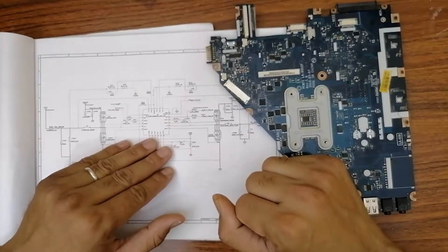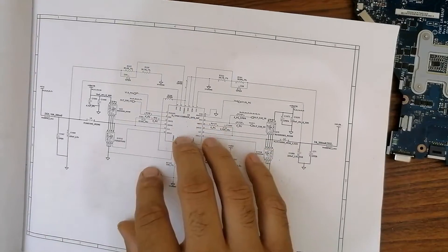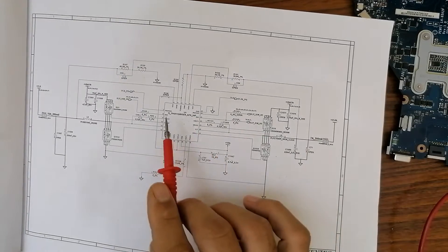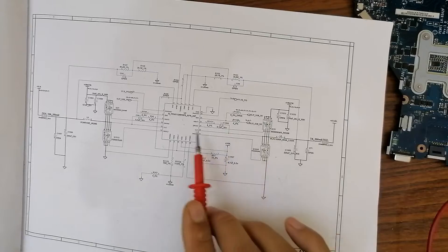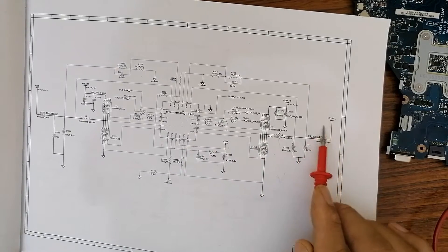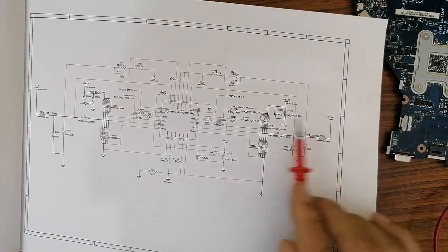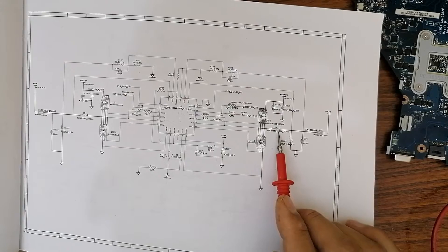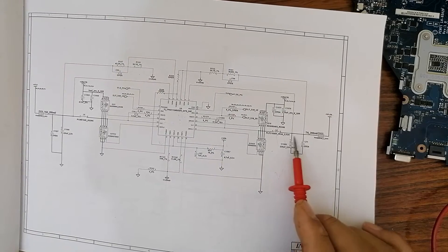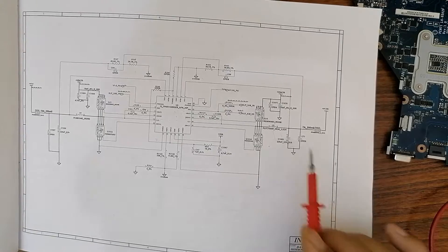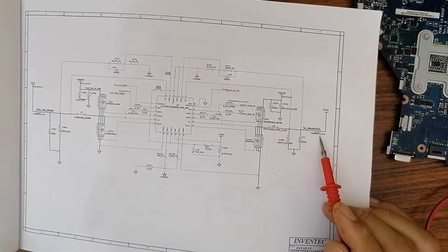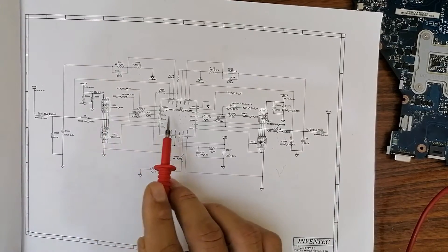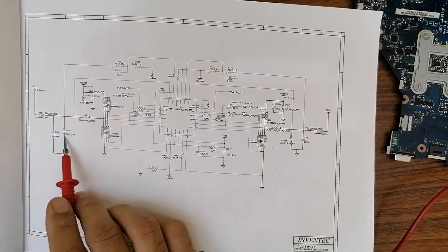Every circuit in the motherboard has about the same components. You will always find a control IC and two MOSFETs. In order to generate power, you need an IC, two MOSFETs, an inductor that adjusts the current, and capacitors that filter the current. The same applies for each channel — as you can see, we have IC, two MOSFETs, inductor, and capacitors.